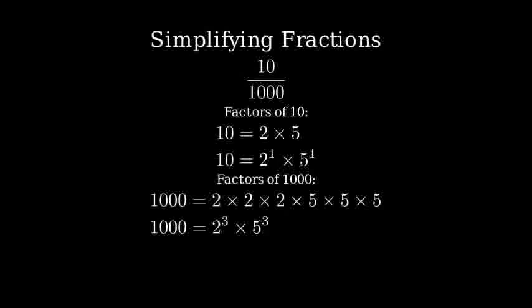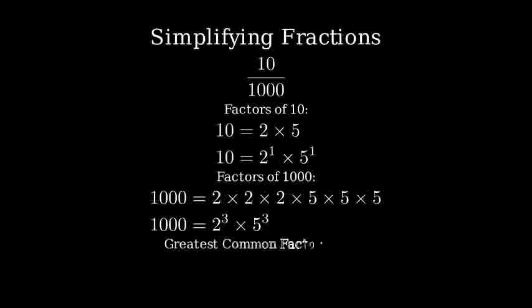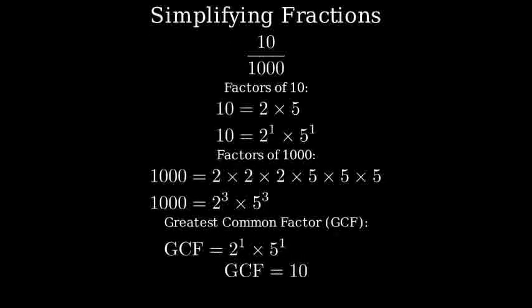To find the greatest common factor, we look at the common factors with their lowest powers. Both numbers have two to the first power and five to the first power in common. So the greatest common factor is two times five, which equals ten.